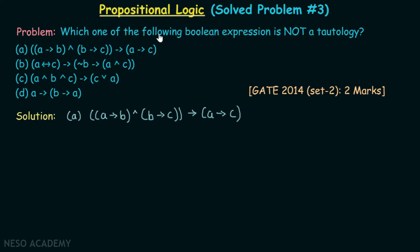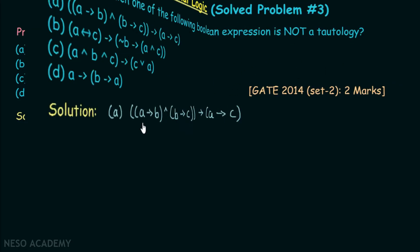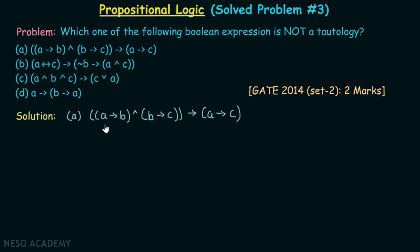Now, this question is asking which one of the following boolean expressions is not a tautology. For one particular combination of truth values, if we can prove that this expression is false, then it is not a tautology.